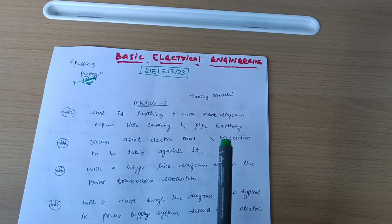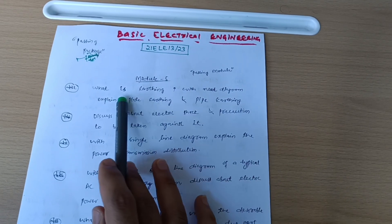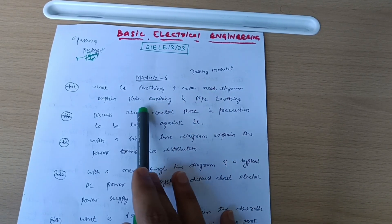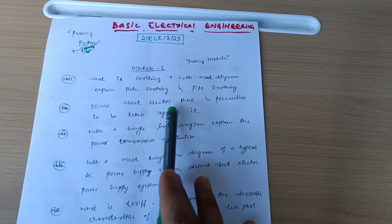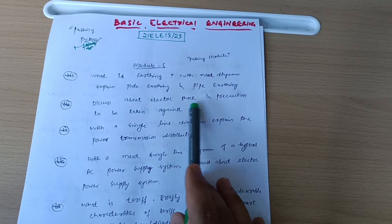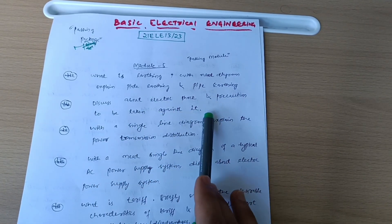Let's start with the passing model, which is Module 5, in which you have to cover six questions only. What is earthing with neat diagram? Explain plate earthing and pipe earthing. Super important question. Discuss about electric shock and precautions to be taken against it.